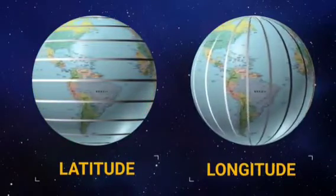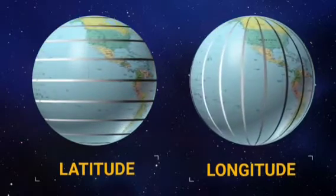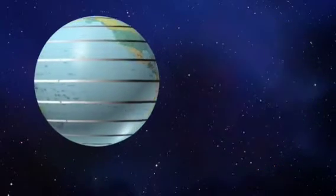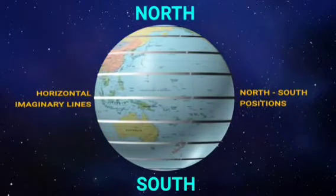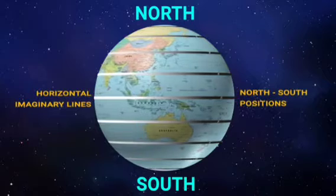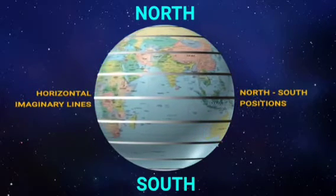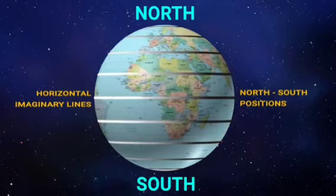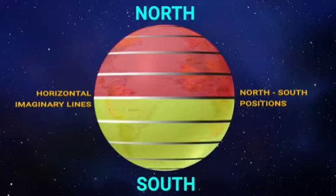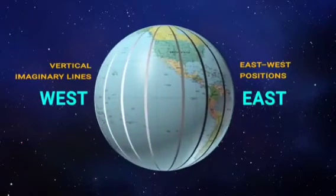Today in this video we are going to discuss latitude and longitude. Latitudes are the invisible horizontal lines that run around the earth. Latitude is a geographic coordinate that specifies the north-south position of a point on the earth's surface.